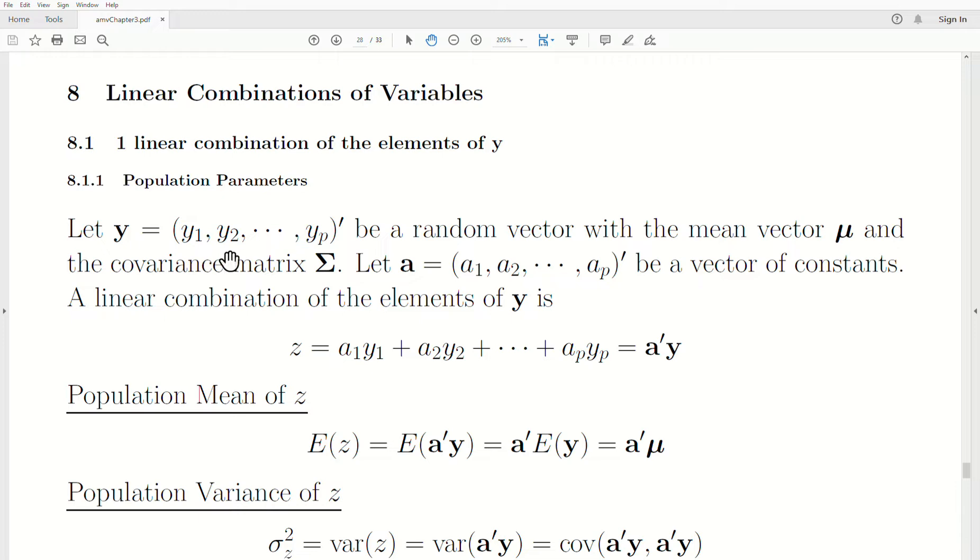Let Y be a random vector. It's a p by 1 random vector with mean μ, so it's a mean vector, and the variance-covariance matrix Σ, capital sigma.